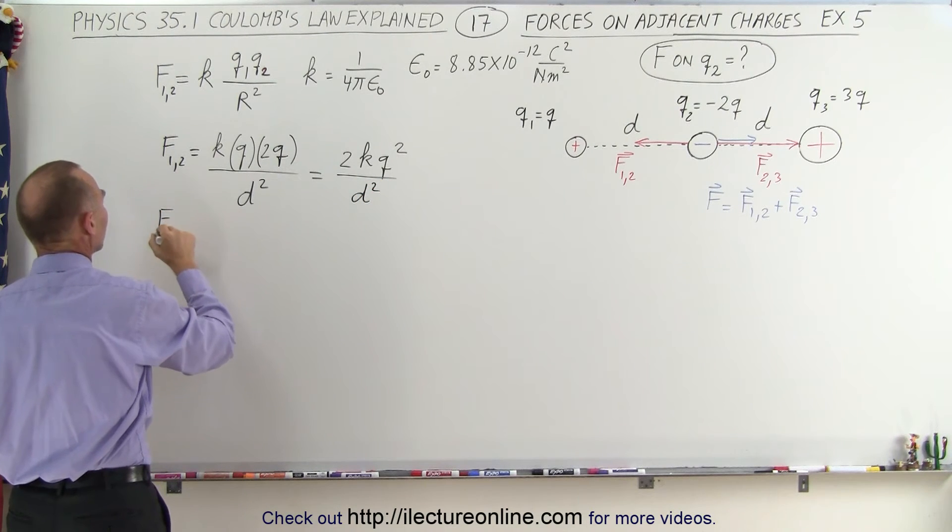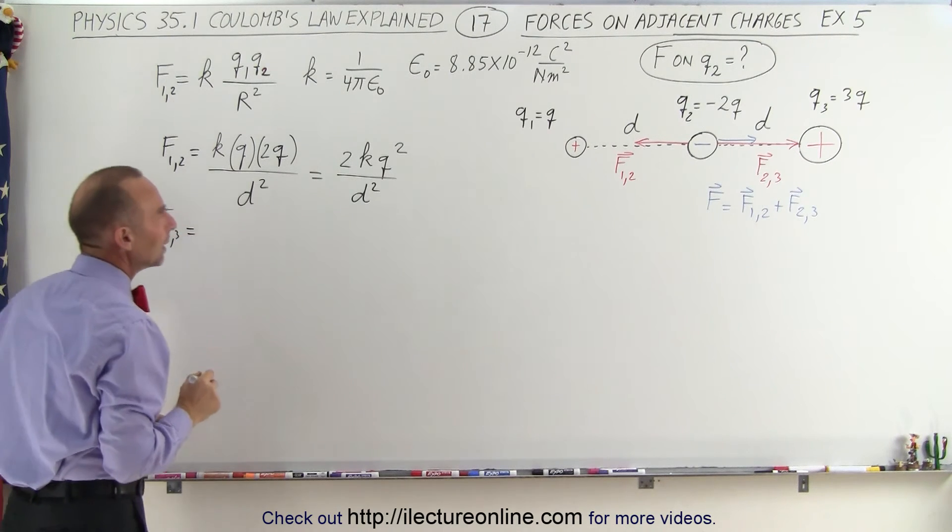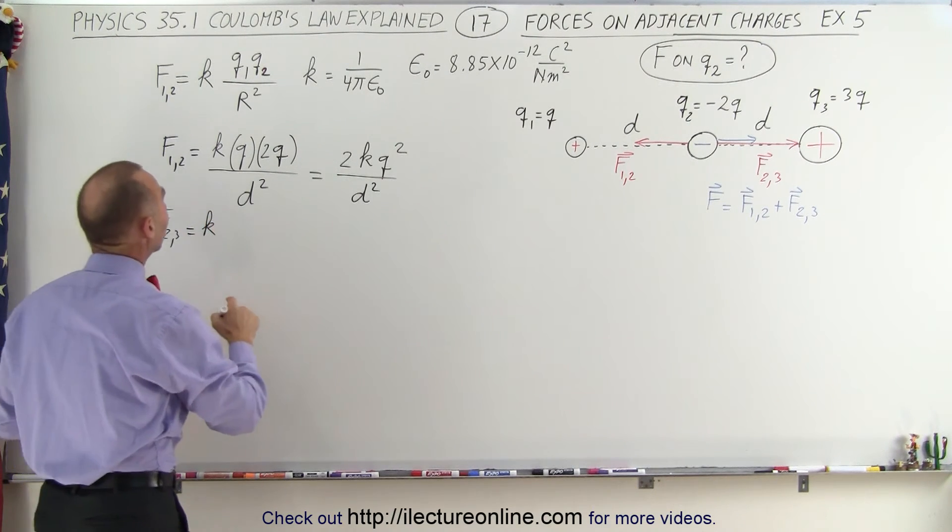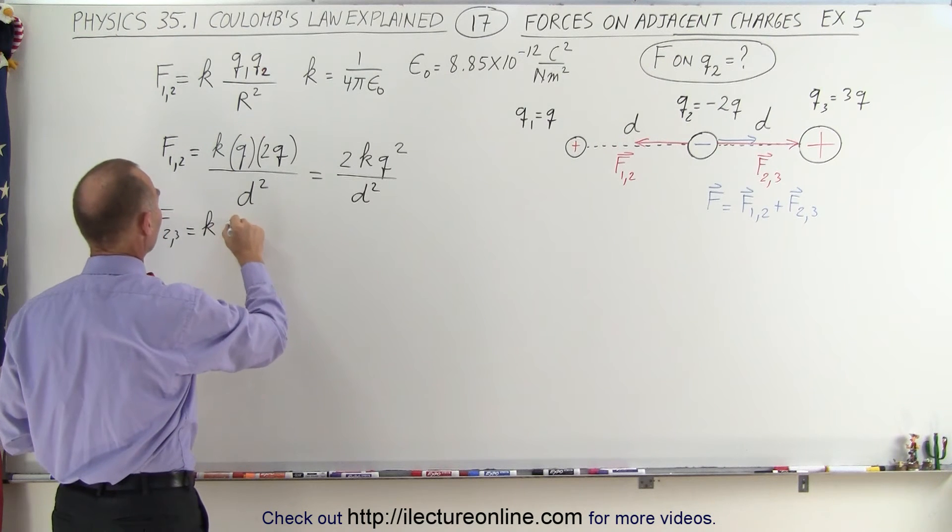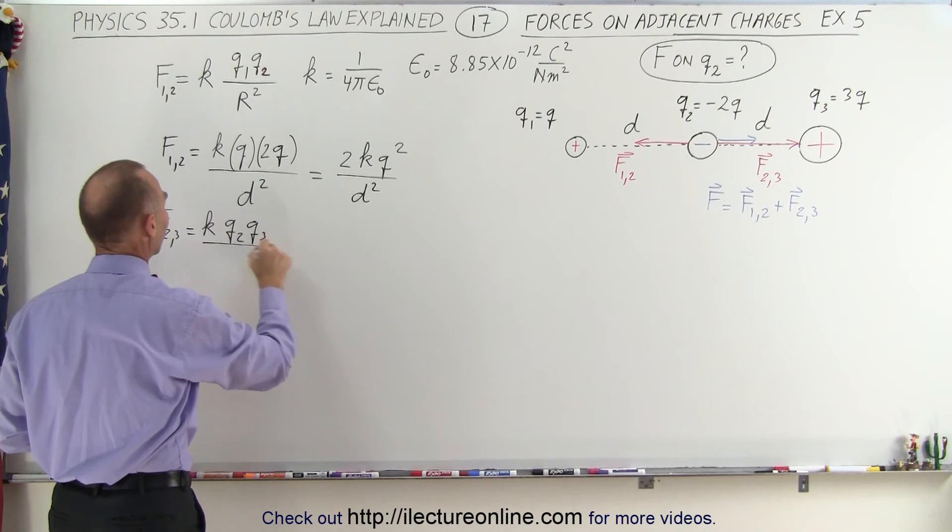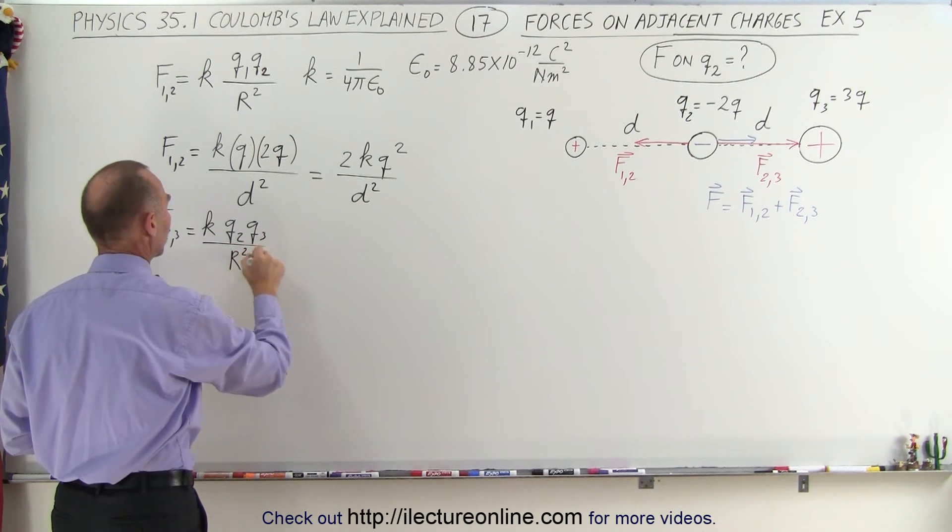We do the same for the force between 2 and 3. That would be equal to K times Q2 times Q3 divided by the distance between them squared. In this case,